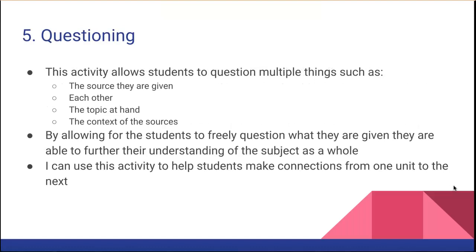This activity allows students to question multiple things, such as the sources they are given. They can question those sources — for example, whether something written in 2009 is relevant for today. They can question each other, asking 'why did you think that?' or 'how did you think that?' They can even question the topic at hand, asking 'why are we doing this?' or 'what should we get from this?' And they can question the context of the sources: 'was this made with this in mind?' 'Who wrote this?' 'How did they write this?'